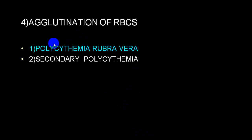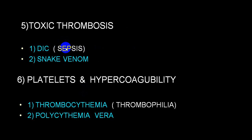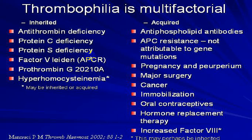Polycythemia rubra vera causes increased RBC mass, sluggish blood flow, and can trigger thrombus formation — similarly with secondary polycythemia. In sepsis, toxins can trigger thrombus formation; even snake venom can trigger it. In platelet disorders — thrombocythemia, thrombophilia, and polycythemia rubra vera — abnormal platelet counts increase chances of thrombus formation. There are inherited and acquired causes of thrombophilia. Other risk factors include stroke, heart failure, obesity, trauma, dehydration, arrhythmia — particularly atrial flutter/fibrillation — acute respiratory failure, severe vasoconstriction, postpartum period, and malignancy.